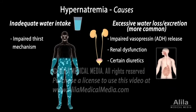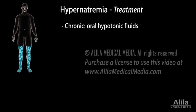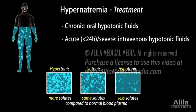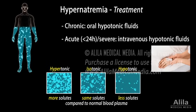Fluid loss through the digestive tract is normally negligible, but can be substantial in vomiting or diarrhea. Sweat loss through skin can be significant in extreme heat or during excessive exercise. Chronic hypernatremia is treated with oral hypotonic fluids, while acute or severe hypernatremia may require intravenous administration along with constant monitoring to avoid overcorrection. The underlying cause must also be addressed.